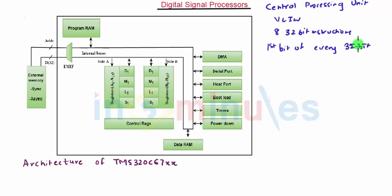Now the fetch packets are always 256 bits wide but they can vary in size. The variable length is the key feature that differentiates C67X CPU from other VLIW architectures.